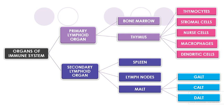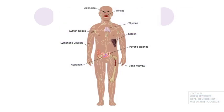So this is an overview of organs of the immune system. The organs are called primary lymphoid organs and secondary lymphoid organs. There are two primary lymphoid organs — bone marrow and thymus — and three secondary lymphoid organs — spleen, lymph node, and MALT. Now let's see a picture where different organs of the immune system are displayed.